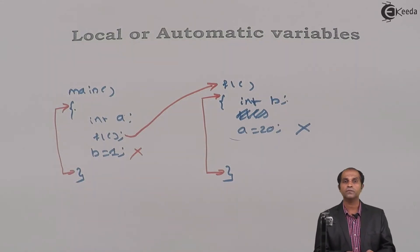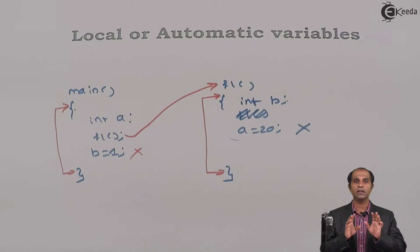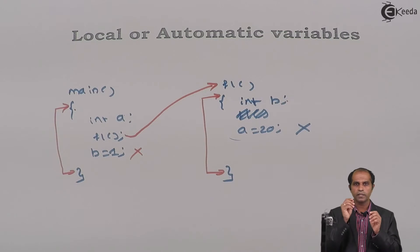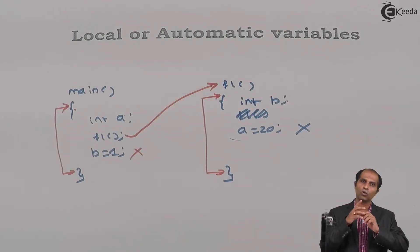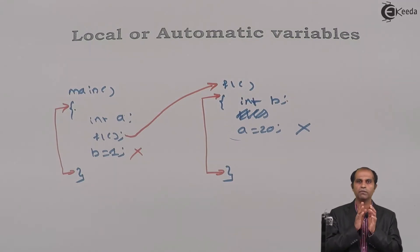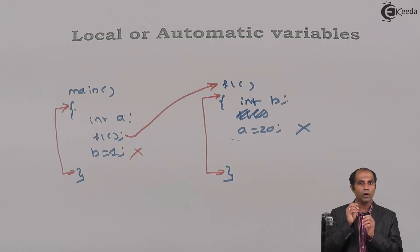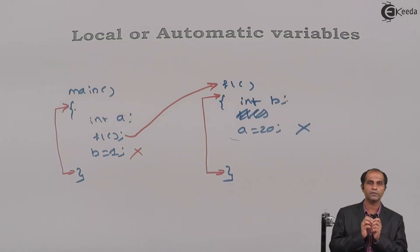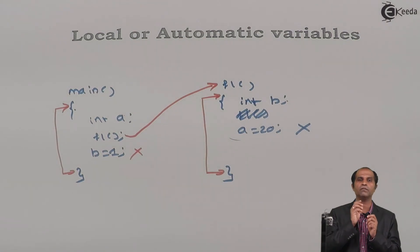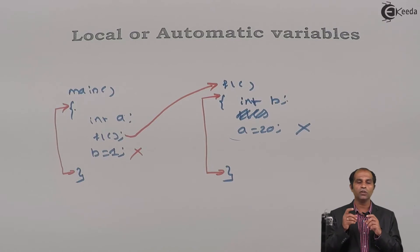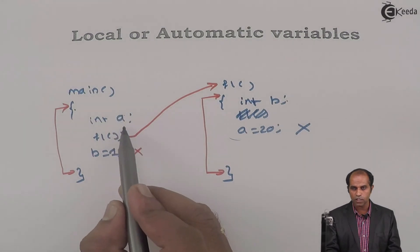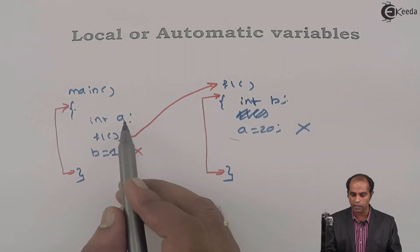The definition: when a variable is declared for a specific function, we call that a local or automatic variable. Life: a variable's life starts at the beginning of the function and ends automatically at the end of the function. Scope or visibility: only within the function in which the declaration appears. Initial value: if not assigned, these values are always garbage values.